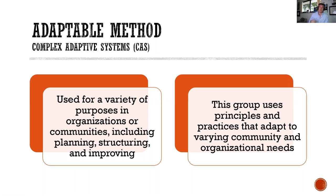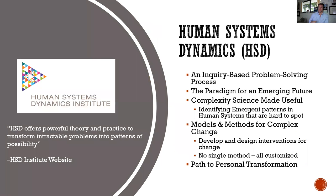So what is the adaptable method? The Human Systems Dynamics approach is part of a complex adaptable system. When we're talking about systems and organizations, we're talking about complexity because we're dealing with people. The adaptable method kind of speaks for itself — it's used for a variety of purposes in organizations or communities including planning, structuring, and improving. There's really not one particular way of doing things; it has a lot to do with assessment.